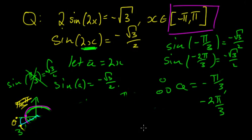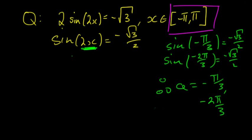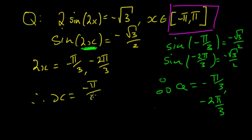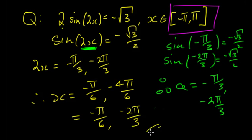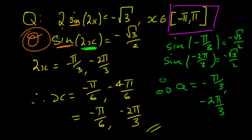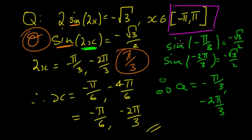Now substituting back a = 2x: 2x = −π/3 and 2x = −2π/3. Dividing both sides by two gives x = −π/6 and x = −π/3 — wait, simplifying −4π/6 gives x = −2π/3. So the solutions are x = −π/6 and x = −2π/3. In summary: identify whether it's sine or cosine, positive or negative, determine the relevant quadrants, find the standard theta value, then find all values within the domain that satisfy the equation.